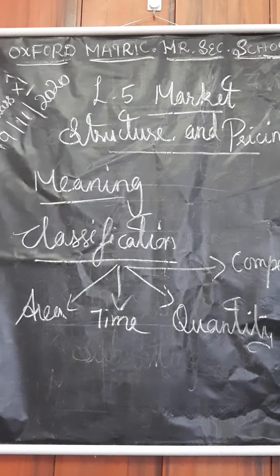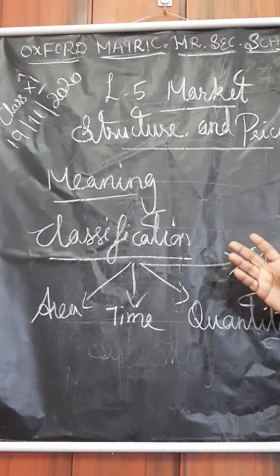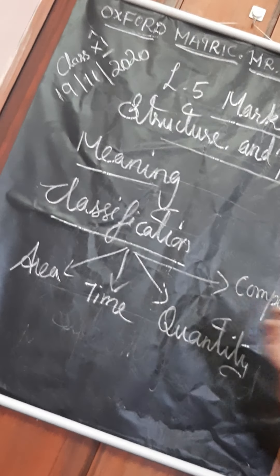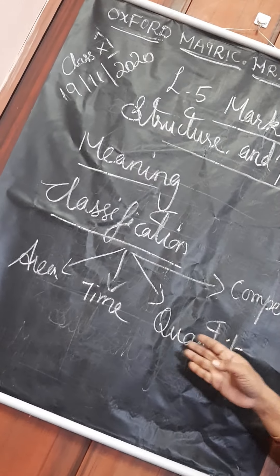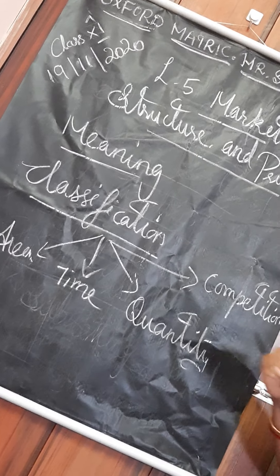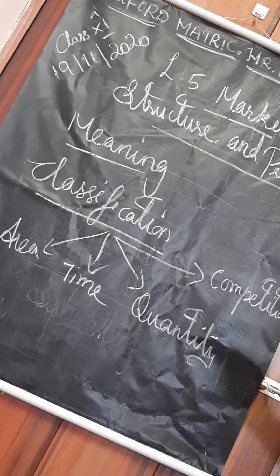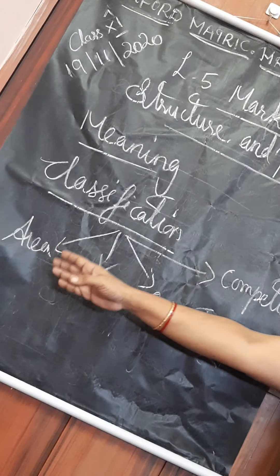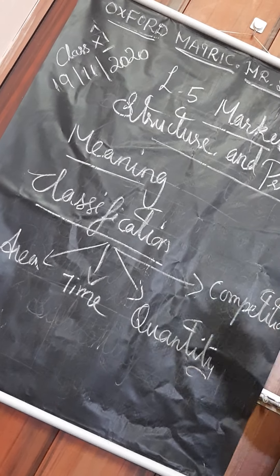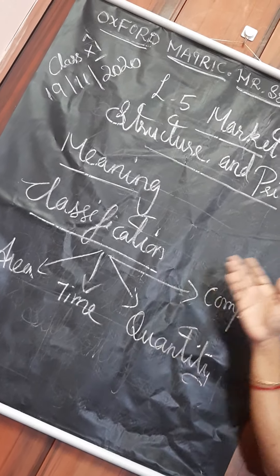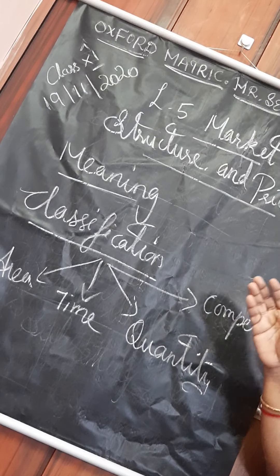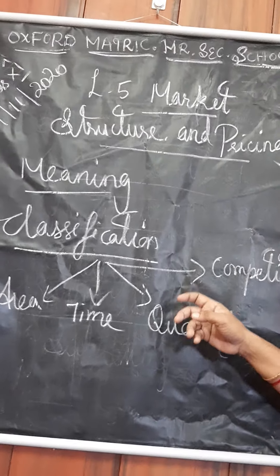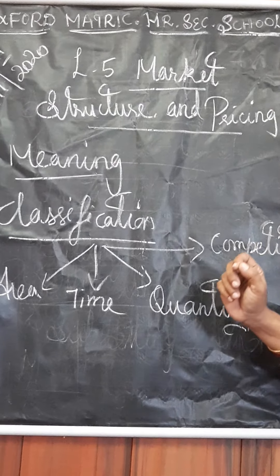Next, we will move on to the classification of market. What are the classifications? On the basis of area, on the basis of time, on the basis of quantity, and on the basis of competition, we classify the market. On the basis of area, the classifications are: local market, provincial market, national market, and international market.